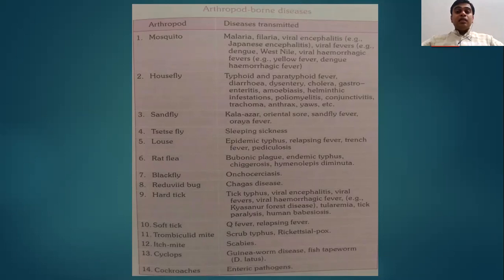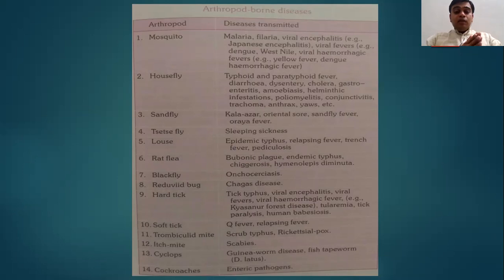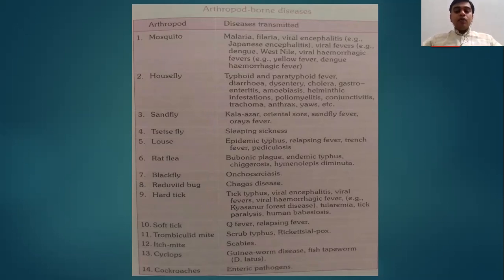Remember, itch mite causes scabies, and it is a direct cause of disease — it is the insect itself. So it doesn't act as a vector; it acts as a causative agent. Most other arthropod vectors act as a medium to transmit the disease from an infected person to the susceptible host. Both itch mite causing scabies and louse causing pediculosis are direct infestations. Cyclops, which is found in water, transmits guinea worm disease and fish tapeworm.